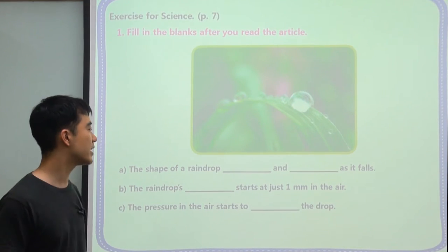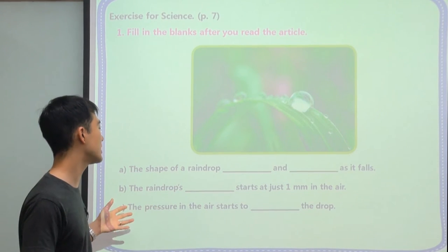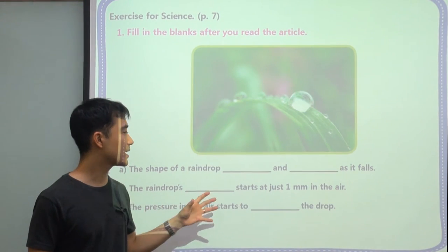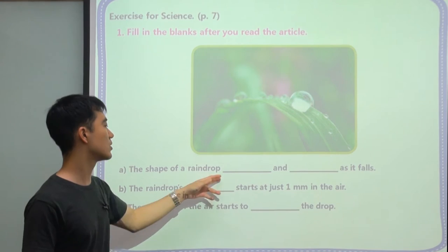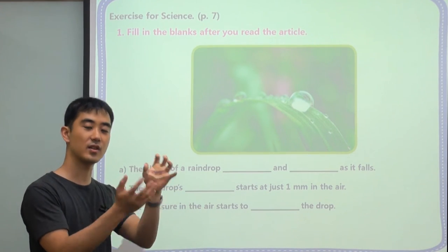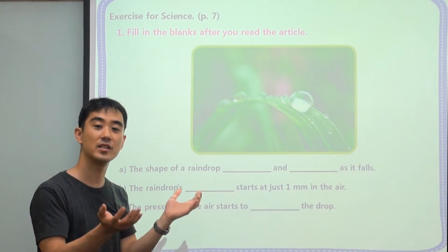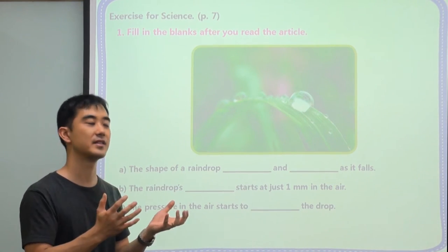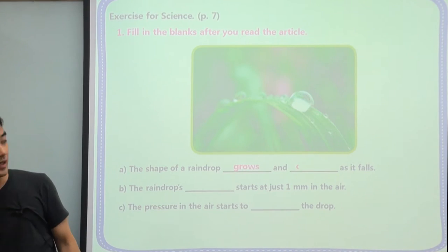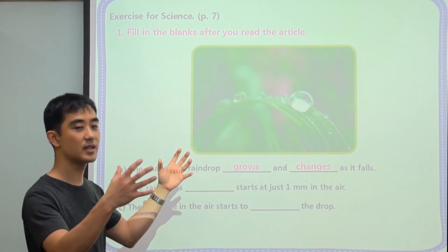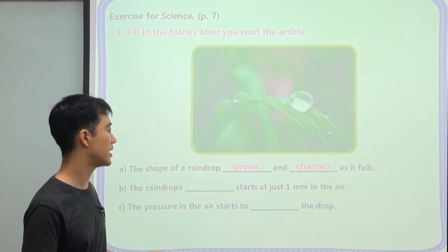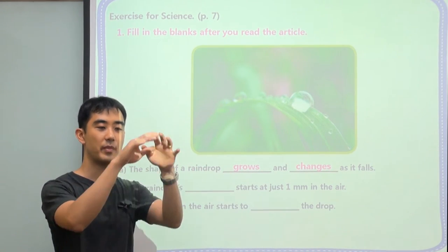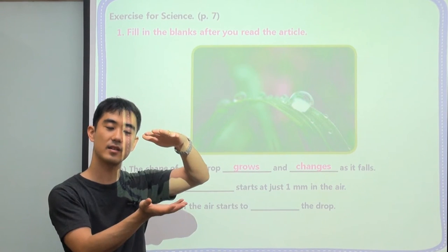Alright, we have three review questions. First: the shape of a raindrop — blank and blank as it falls. It doesn't stay the same, it's always being different. The answer is: it grows and changes as it falls. It grows, it splits, it gets bigger, it turns into a pear shape, it turns into a little flattened shape.